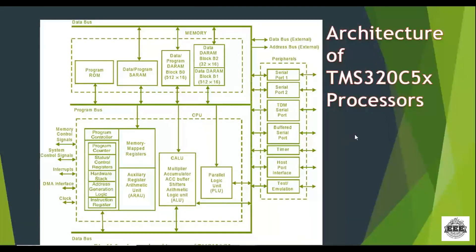Now we are entering the architecture, which is very important according to the syllabus. This is a simplified architecture of the TMS320C5x processor. The CPU is the main part, which consists of an auxiliary register, memory mapped register, and a program controller. The CPU also includes accumulators and a parallel logic unit (PLU). The memory part contains RAM, and there is a serial port in the peripheral section.